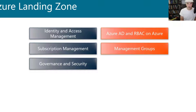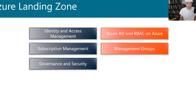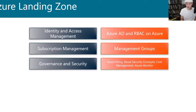The next topic is governance and security, which covers a wide range of things you have to consider on Azure. Identity and access management could be considered part of security, but it's best to think of it separately since it's something you configure out of the gate to get your tenant set up. Once you have that set up, governance and security takes on a whole life of its own — covering things like Azure Policy, security concepts, and cost management and monitoring.